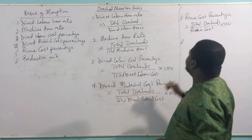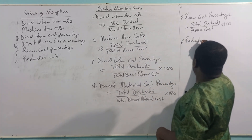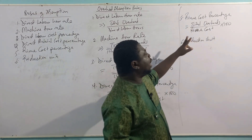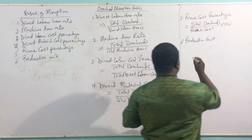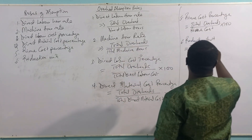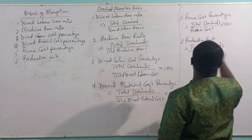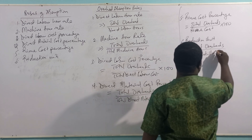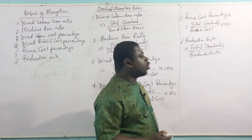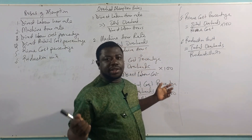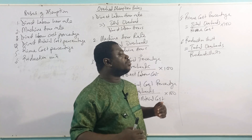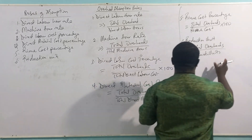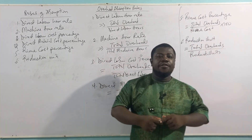The sixth and last basis is the production units rate. Here we look at total overheads per production unit — that is, total overheads ÷ total units produced. For example, if total overheads are 3,000 and you produce 1,000 units, then it is 3 cedis per unit. These are the common bases for overhead absorption.